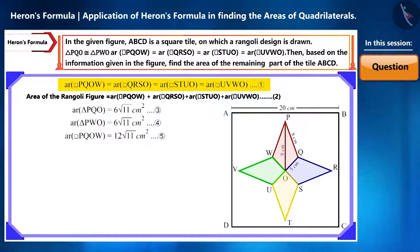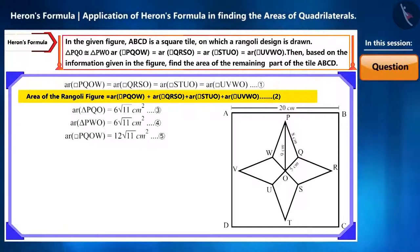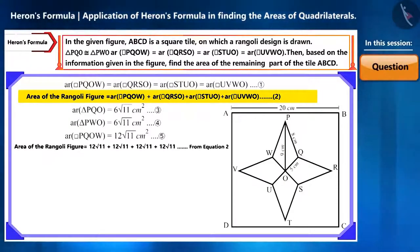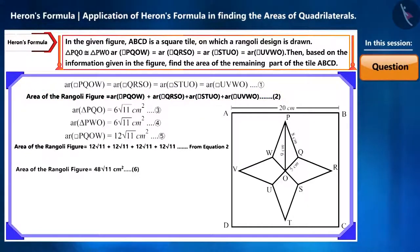The areas of these four quadrilaterals are equal. Friends, look at equation 2. We can obtain the area of this rangoli by adding the area of the four quadrilaterals, which we obtained as 48√11 cm². Let's call it equation 6.